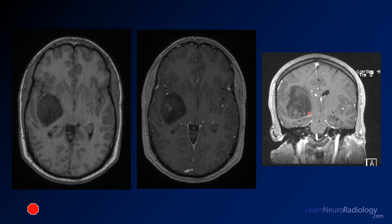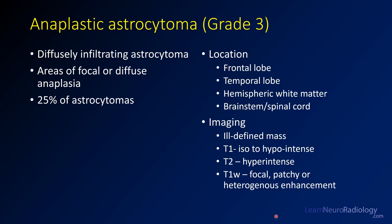Here you see a coronal reformat of that same post-contrast image. Again, you see some hazy internal enhancement, but not very avid enhancement, and relatively well-defined margins. What we're looking at is a grade 3 astrocytoma, or anaplastic astrocytoma. These are diffusely infiltrating astrocytomas that can have areas of focal anaplasia, making up about 25% of astrocytomas. Like the lower-grade astrocytomas, they occur in the frontal and temporal lobes, and throughout the hemisphere; they can also occur in the brainstem or spinal cord, though rarely. On imaging, you see an iso- to hypointense mass on T1 that's bright on T2 or FLAIR, with focal or patchy heterogeneous enhancement on post-contrast imaging.